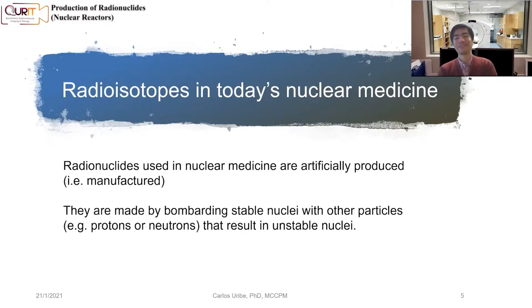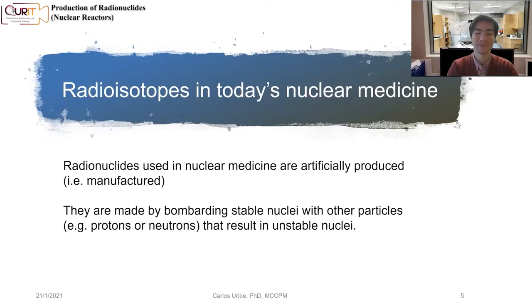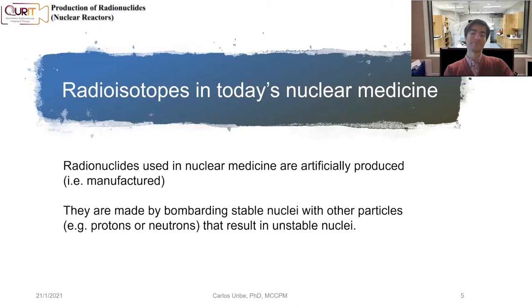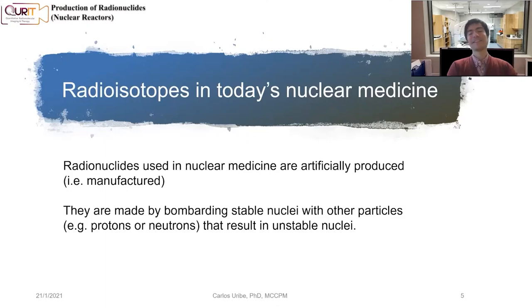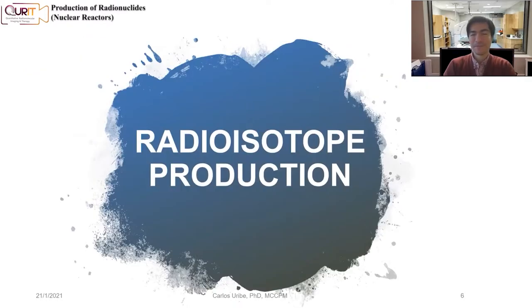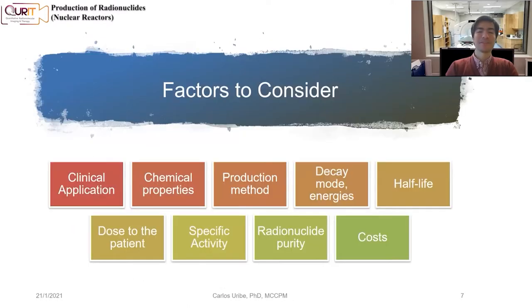How do we manufacture radioisotopes? We do this by bombarding stable nuclei with other particles. For example, we can use protons or neutrons that, when they interact with the nucleus of stable nuclei, can result in unstable nuclei — and we have a radioisotope. So let's dig into this radioisotope production.